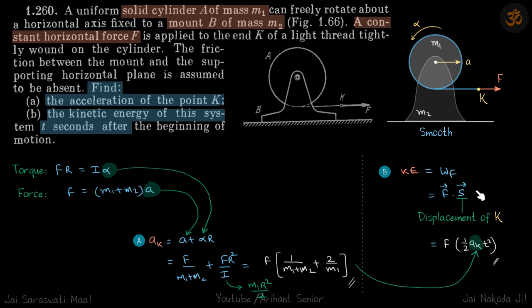Displacement of this point K. Why we are using this approach? Because we already found the acceleration of K. Since force and S are in same direction, this becomes F into S, and S is half a_K into T². Put the value of a_K here and this will be our kinetic energy at time T.